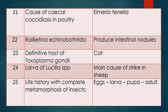Question twenty-three: Name the definitive host of Toxoplasma gondii. Answer: Cat. Question twenty-four: Larva of Lucilia species — what does it mainly cause? Answer: They mainly cause strike. This is an important question.